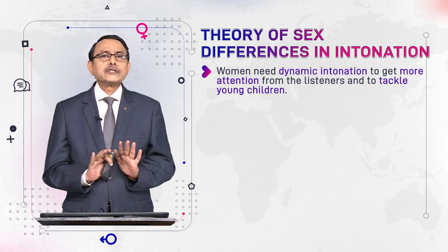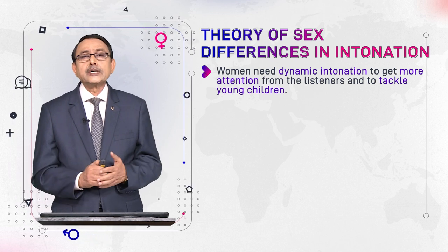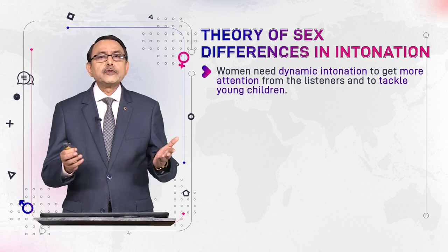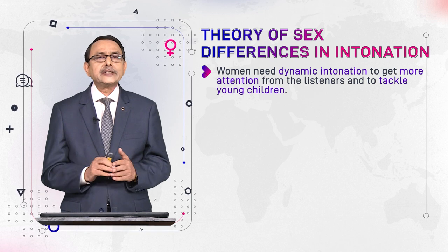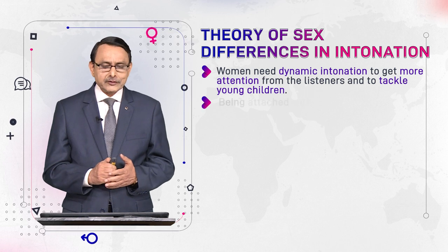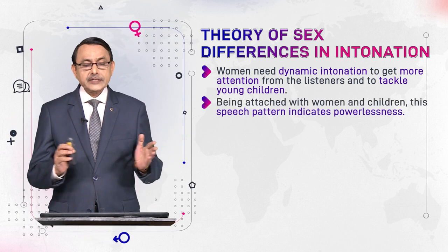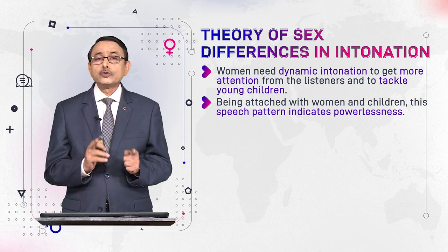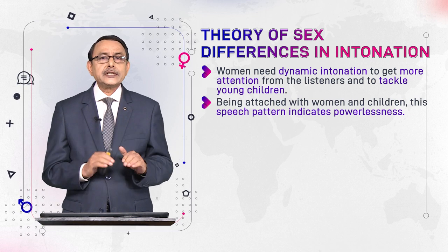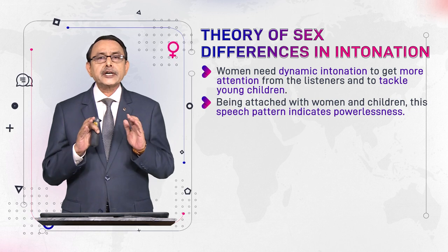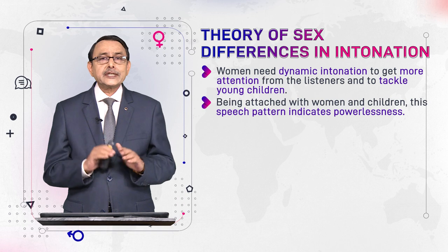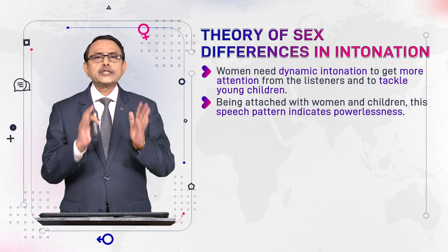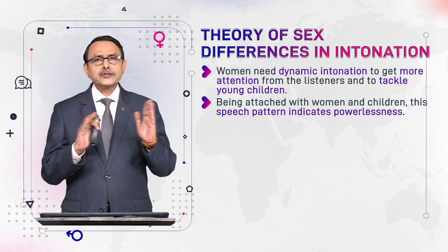A level tone won't work with children. If you see some male member of your family, that person cannot easily tackle a child — if the child is weeping, he would feel embarrassed and call others to help. So, being associated with women and children, this dynamic intonation pattern indicates powerlessness for those who believe in male superiority, patriarchy, and cultural stereotypes. Though these days, cultural stereotypes have undergone many changes because of awareness about justice and civil rights.